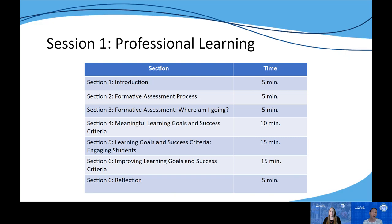In terms of the content overview within the professional learning, it starts with a brief introduction and a quick refresher of the formative assessment process introduced in module two. Section three takes a closer look at how the formative assessment process helps students answer that first question of where am I going, which we address through learning goals and success criteria. Section four examines the characteristics of meaningful learning goals and success criteria. Section five covers how to engage students in the learning process, and section six is a check for understanding focused on improving learning goals and success criteria.